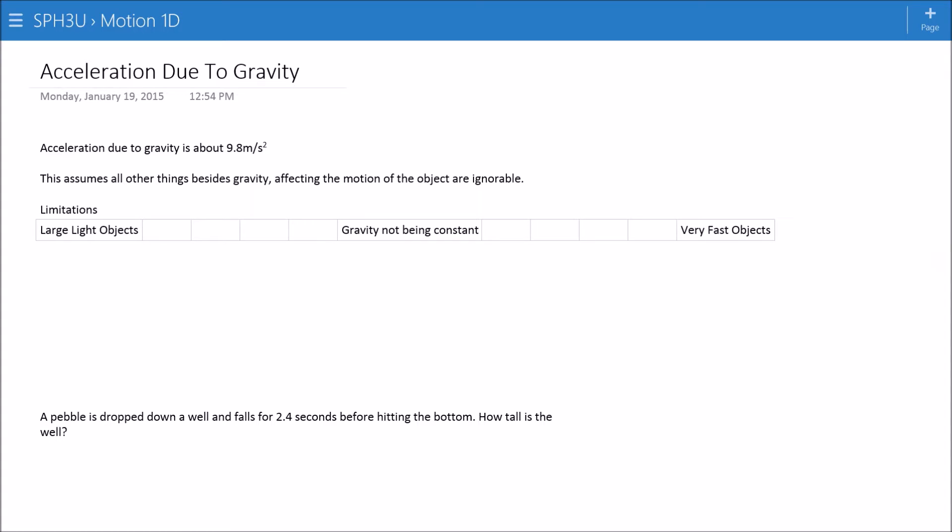Objects will accelerate at 9.8 meters per second squared down, assuming that gravity is the only force that's acting on them. If there are other forces, the main one that I think of here is wind resistance, or if you had something like a parachute, an airplane, or something like that, then the object obviously won't just accelerate due to gravity. It'll accelerate due to all of the forces acting on it, and as a result, the acceleration won't be 9.8.